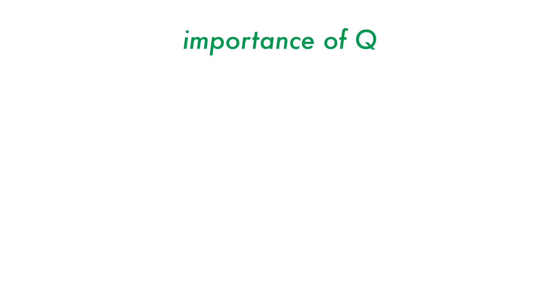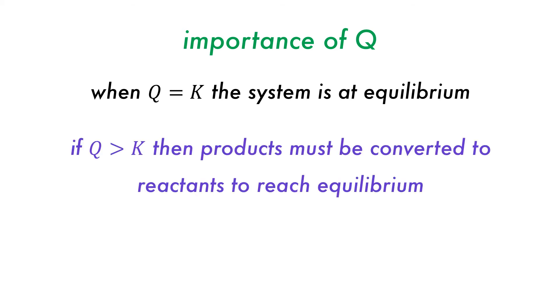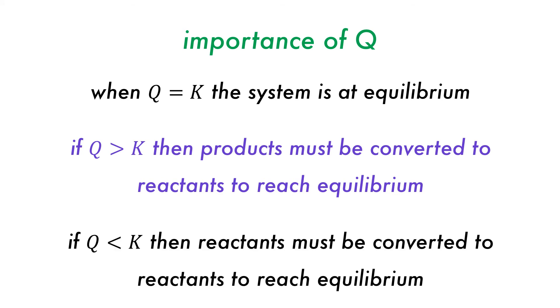Determination of Q is useful because it can tell if the system is at equilibrium, because at this point Q will equal K. If Q is greater than K, then some of the products must be converted to reactants to reach equilibrium. And if Q is less than K, then some of the reactants must be used to form products in order to reach equilibrium.